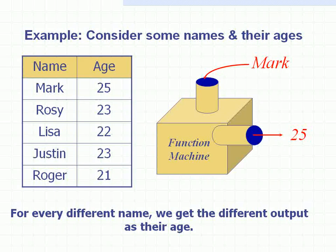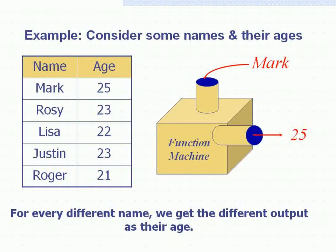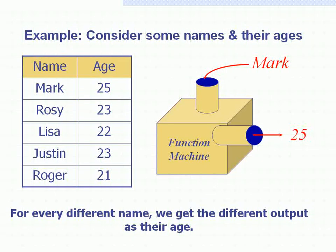Let's understand functions with the help of an example. The table shown in the picture shows the names of persons and their respective ages. A function machine is showing the relation between names and ages. We are putting a name as input and getting age as output. We put the name Mark in the machine and get the output as his age, 25. In the same manner, if we put the name Rosie, we will get the output as 23.